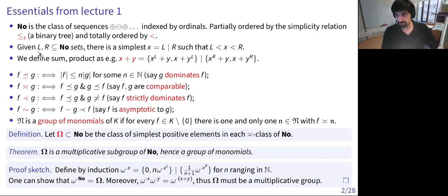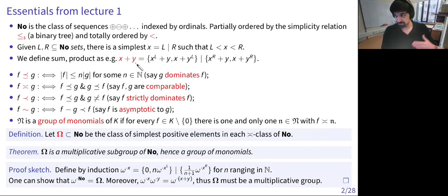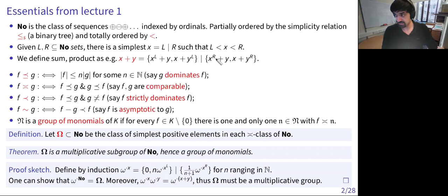Given two sets of surreal numbers, you can always find a unique simplest element between the two sets. We're using the notation L bar R to denote this simplest number. We do this because it's a convenient notation for these kinds of definitions. So we define the sum x plus y by induction as the simplest number between certain sets — the left option of x plus y, for example — and we define this simplest number to be x plus y.